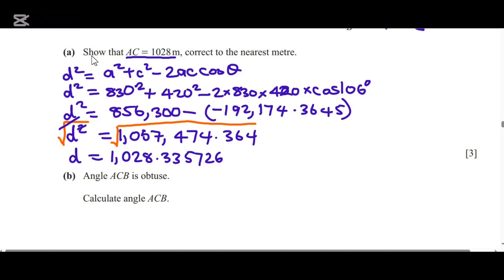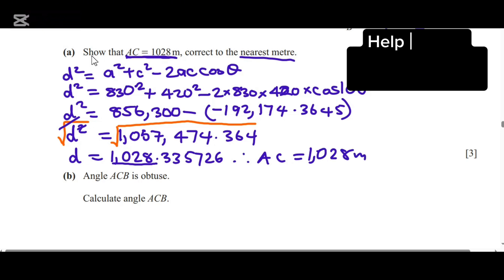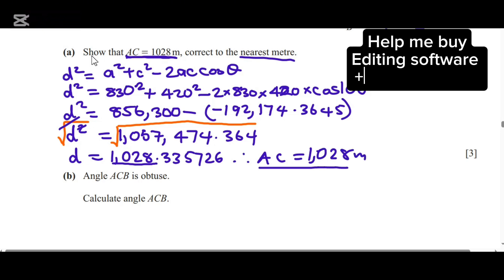Since they wanted us to show that AC is 1028 meters, we can see that if we round this to the nearest meter, we have AC = 1028 meters. So we've shown that.